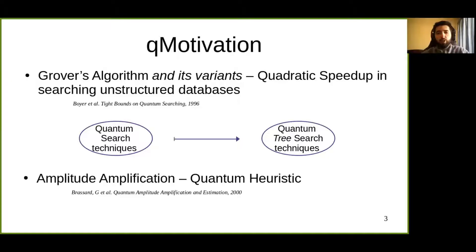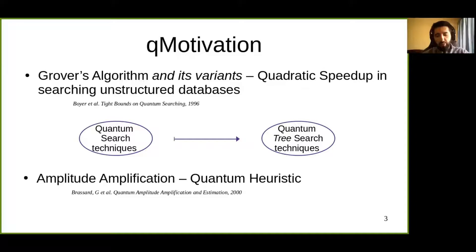Another interesting topic is amplitude amplification. Amplitude amplification is some form of a quantum heuristic. At this point, I will leave you with a question that I find very interesting, which is: what about quantum informed search? Maybe amplitude amplification has something to do with this. At the end of this talk, I will try to answer this question.